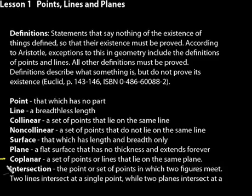And, some other definitions here. Coplanar, that's a set of points or lines that lie on the same plane. And then, intersection, that would be the point or set of points in which two figures meet. Two lines, they would intersect at a single point. Two planes, they would intersect at a line.